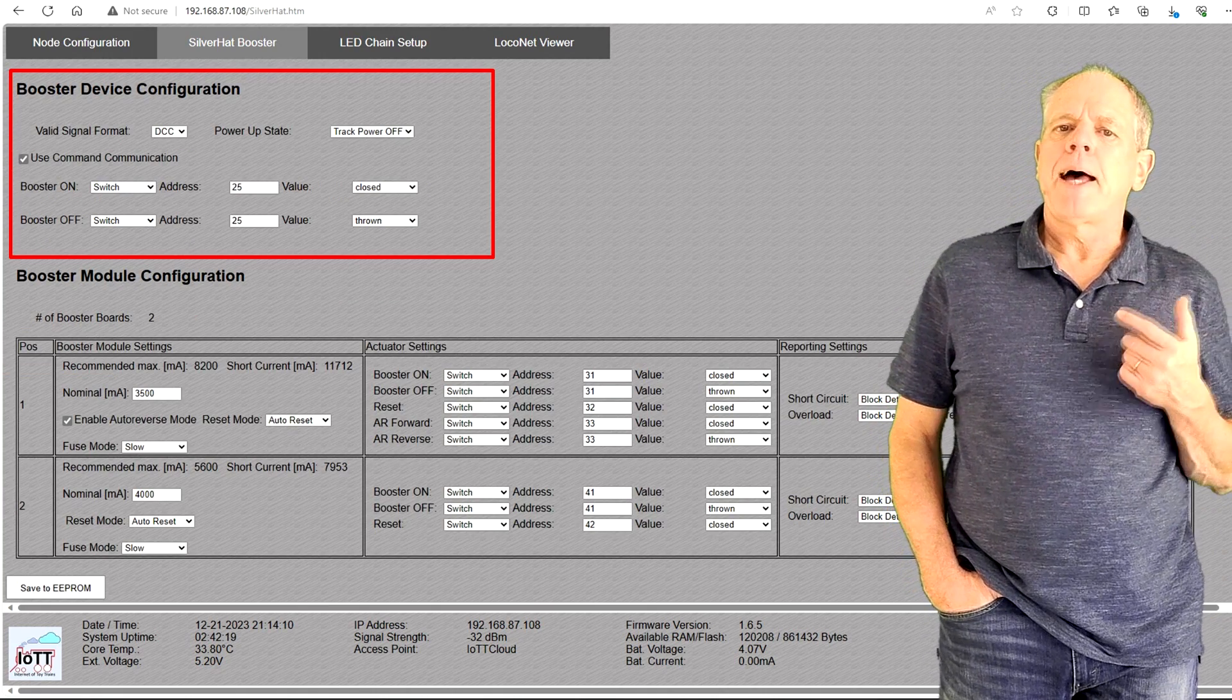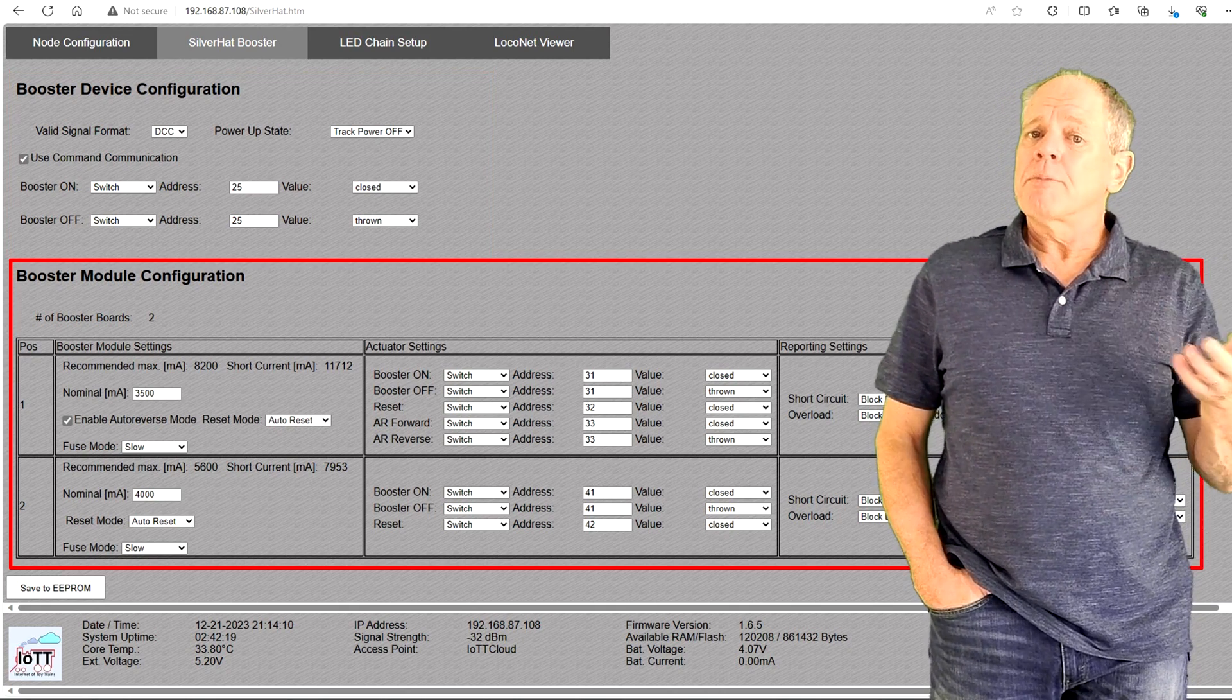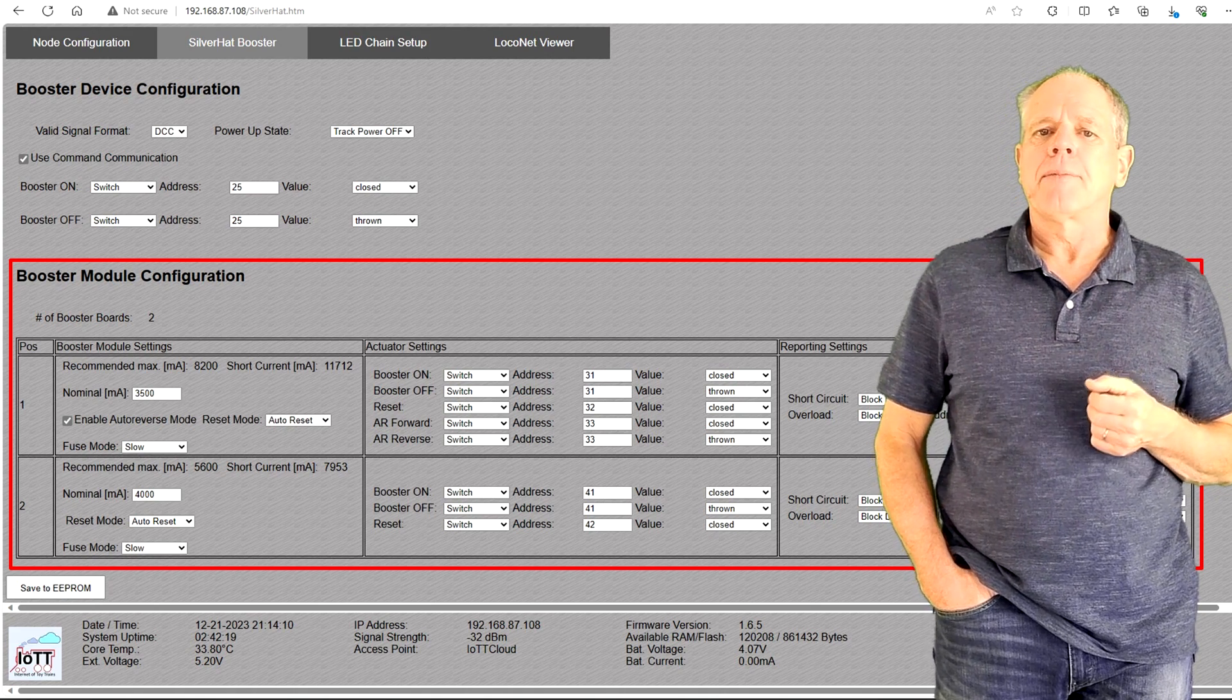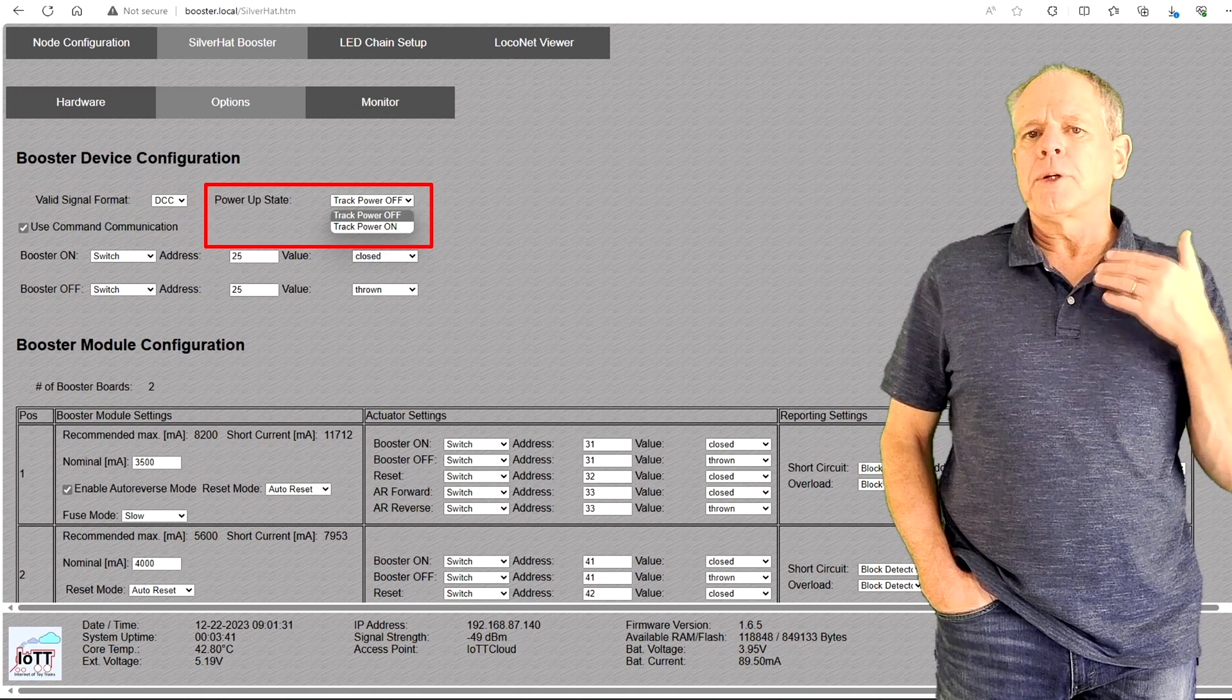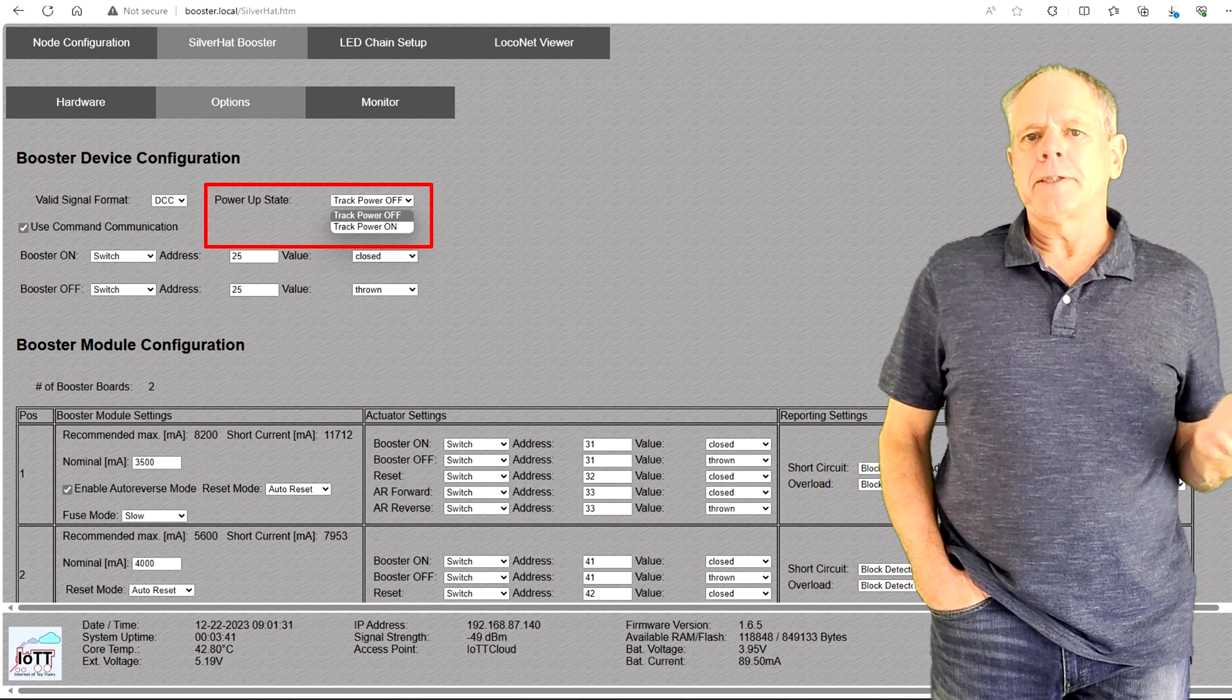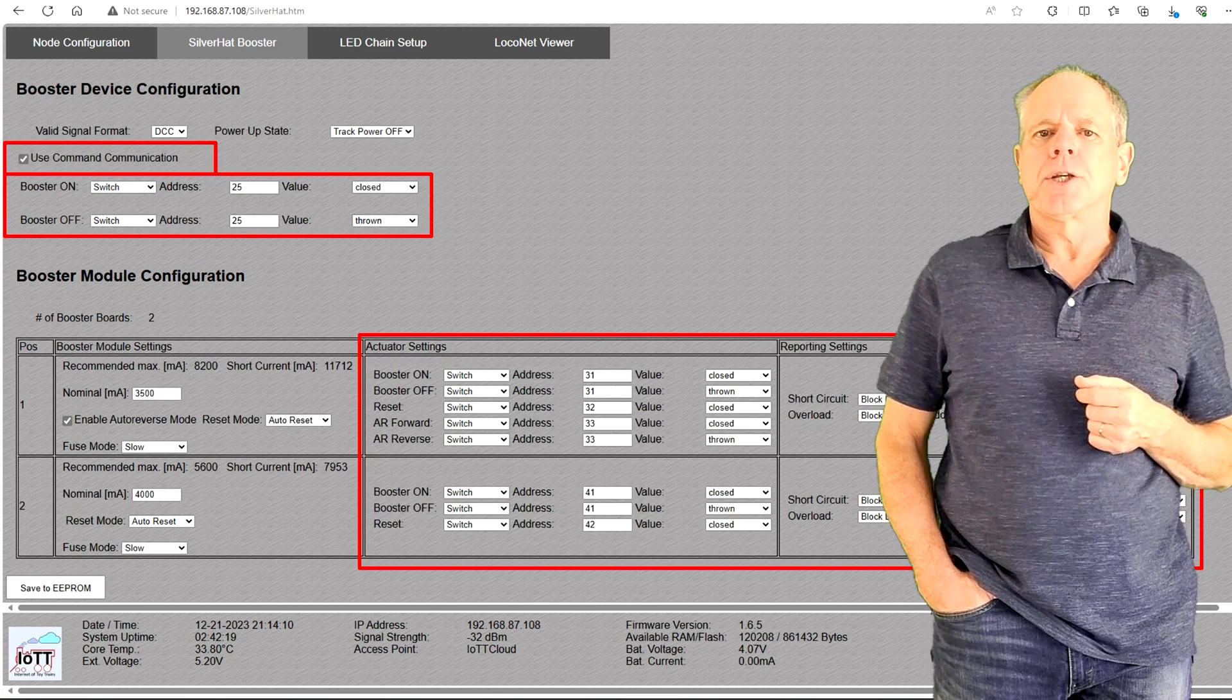The Options tab has two parts. In the top section are the configurations for the entire booster. The lower part has settings that are specific for each booster channel. Select DCC as Valid Signal Format and ON or OFF for the track status at PowerUp.